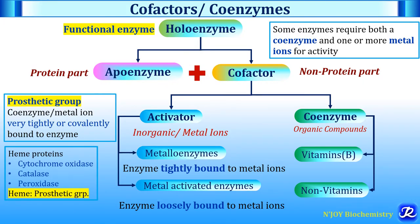For example, the heme proteins like cytochrome oxidase, catalase, and peroxidase have heme as a prosthetic group. Some authors use the terms prosthetic group, cofactor, and coenzyme interchangeably.